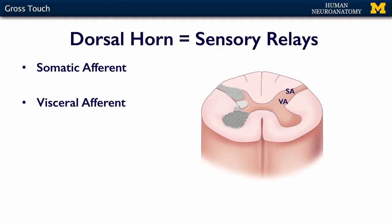As we talked about in the spinal cord lectures, when we discussed the different areas of the spinal cord gray matter, we talked about somatic afferent and visceral afferent. These are the two broad modalities represented in the spinal cord dorsal horn. From your surface are your somatic afferents, and in that intermediate zone are the visceral afferents, represented by the hatched areas here.